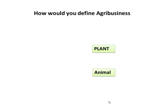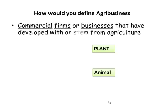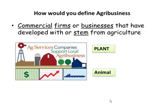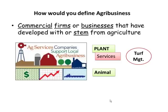So let's look at agribusiness. Agribusiness deals with commercial firms and businesses that have developed or stemmed from agriculture itself. For example, looking at services on the plant side, we look at plants as a raw material — turf management would be an example of an agribusiness operation.